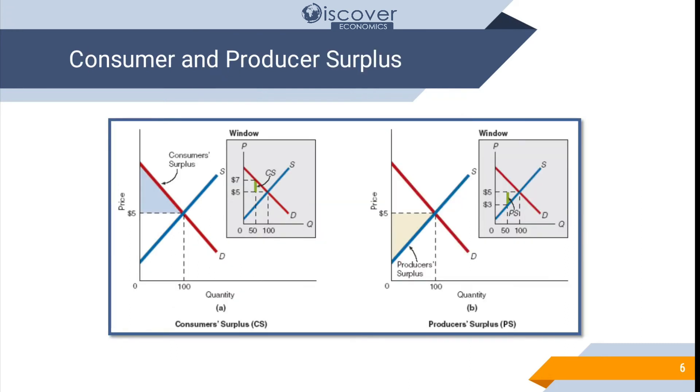Now this is a comparative diagram. You can see the consumer surplus is below the demand line and producer surplus is below the supply line. So producer is concerned with supply and consumer is concerned with demand.